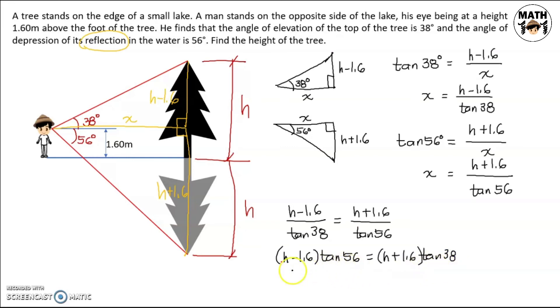Then distribute tangent 38 and tangent 56. Then combine all the like terms. We'll have here h tangent of 56 minus h tangent of 38, that is equal to 1.6 tangent of 38 plus, since this is negative, when we move it it becomes positive, 1.6 tangent of 56. So simplifying everything and using our calculators, we'll get that h is just equal to 5.17 meters.